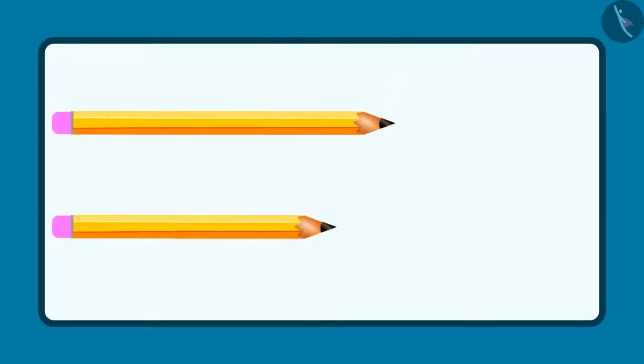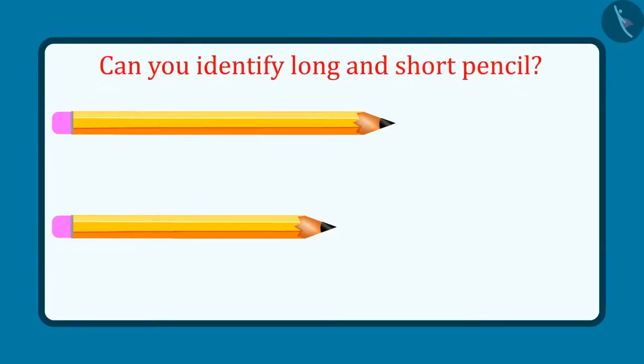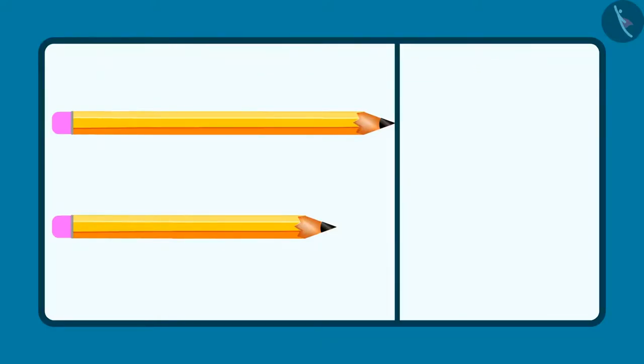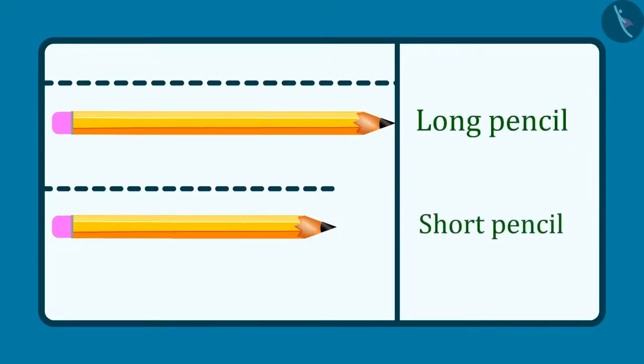So kids, can you also identify the long object and the short object out of two objects? Come, let's see. These are two pencils. Now tell me, out of these two, which one is the long pencil and which one is the short pencil?